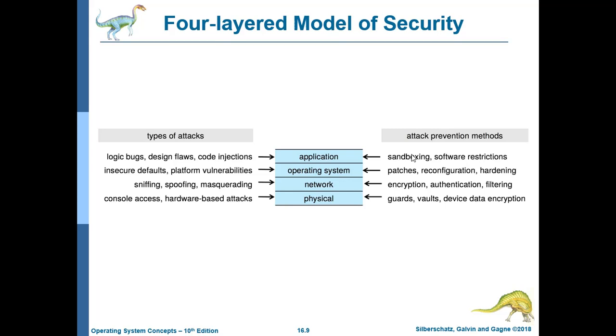Hardening means improving the security features of your operating system. For network threats, we have sniffing — getting useful information from network traffic — and spoofing, which is the imitation of a legitimate identifier such as an IP address by an illegitimate user.